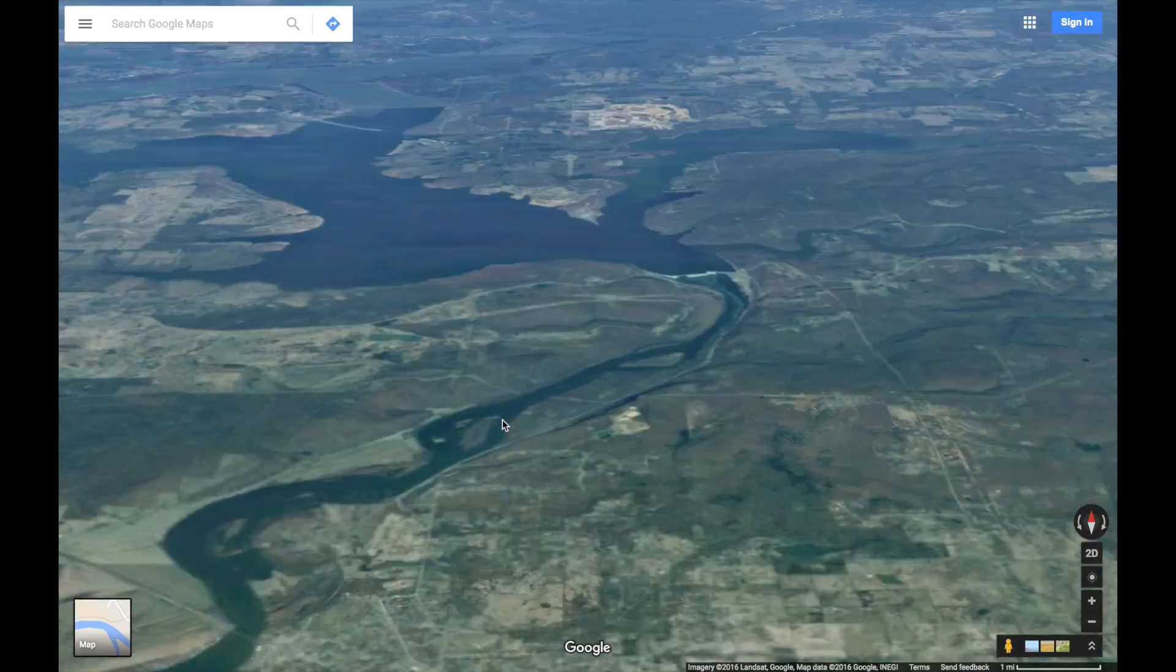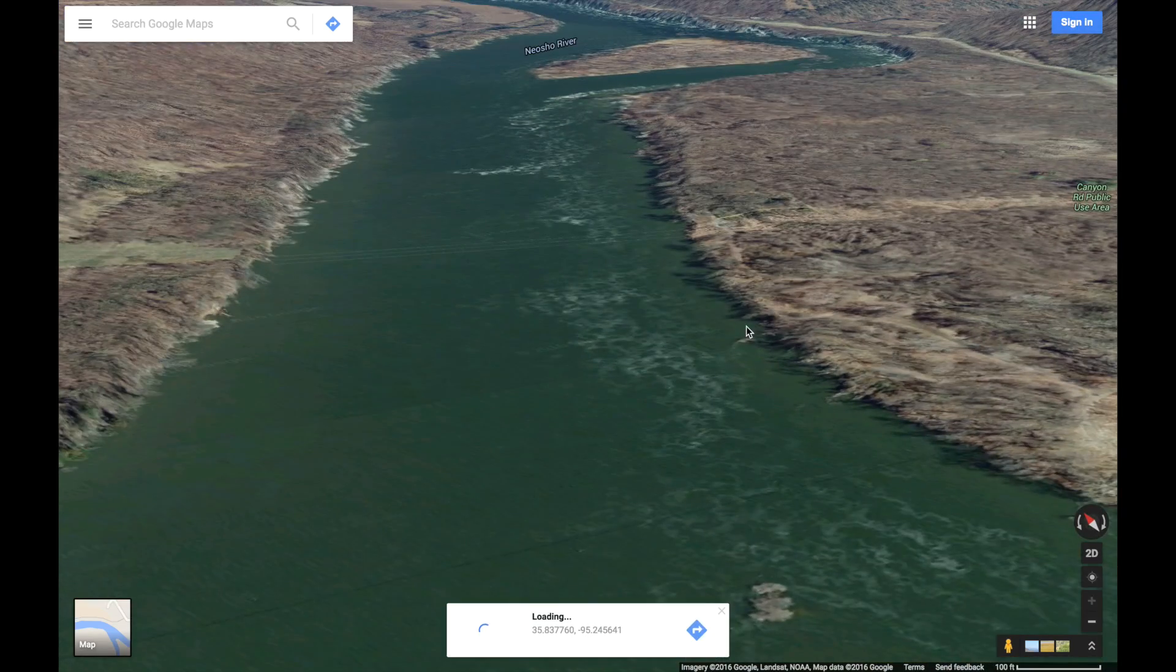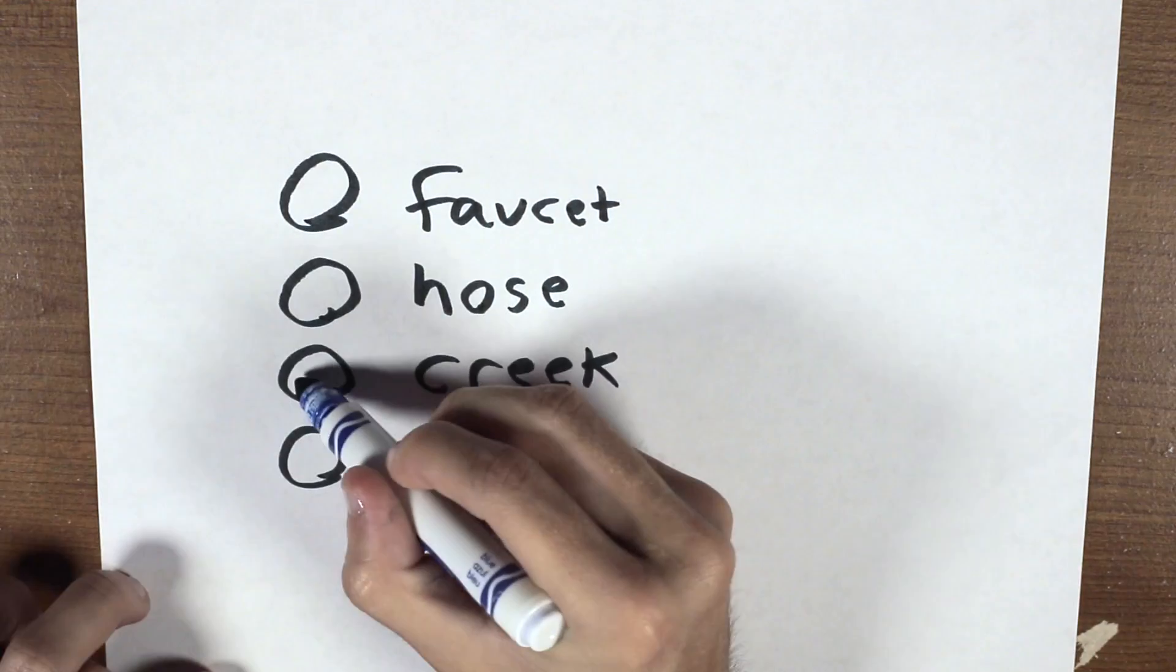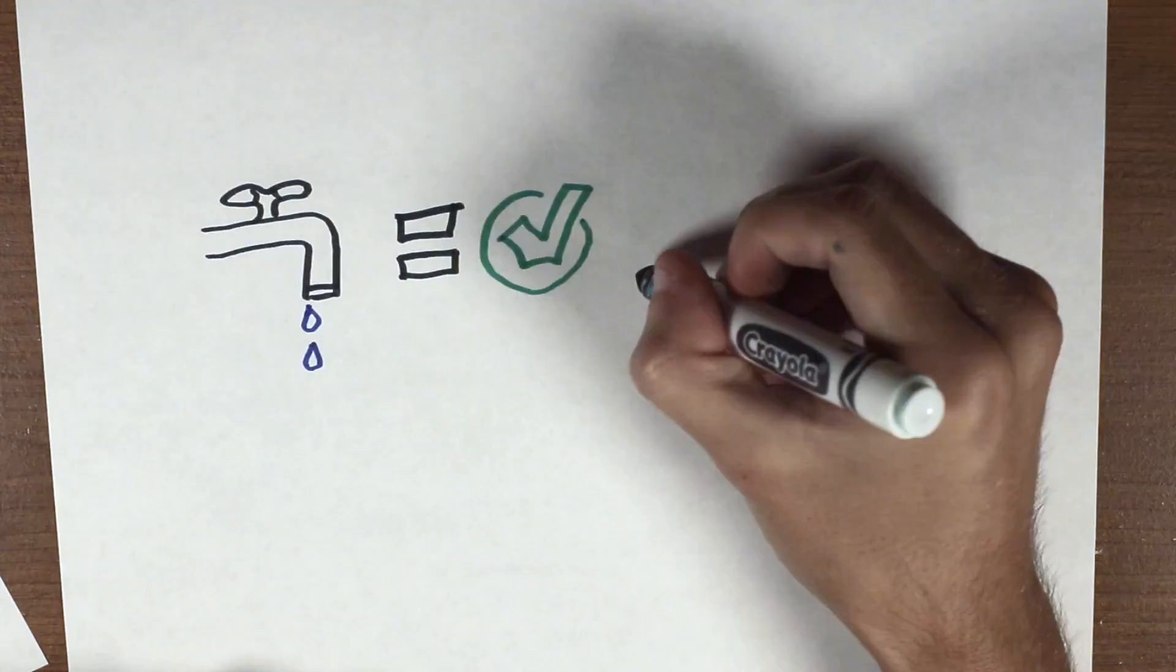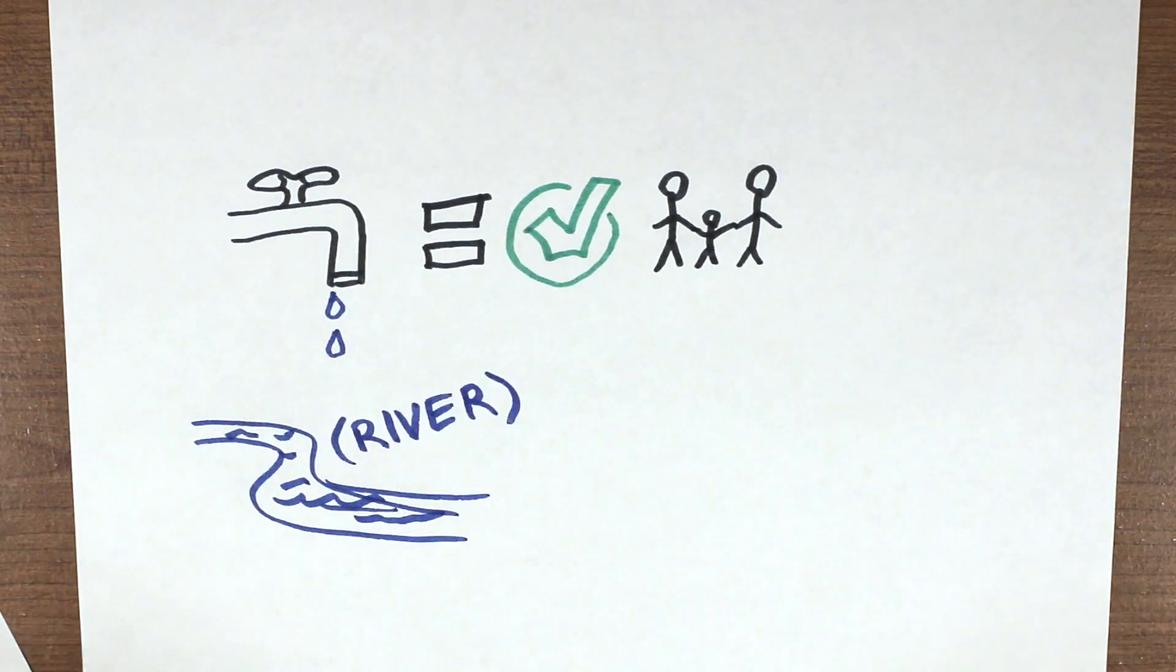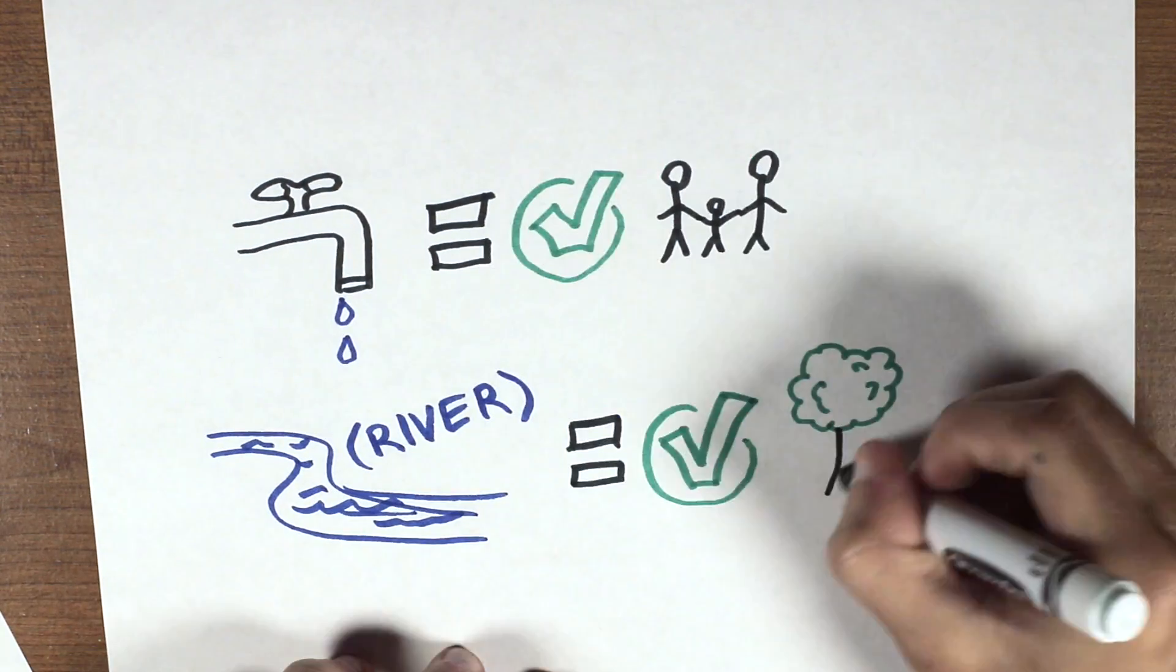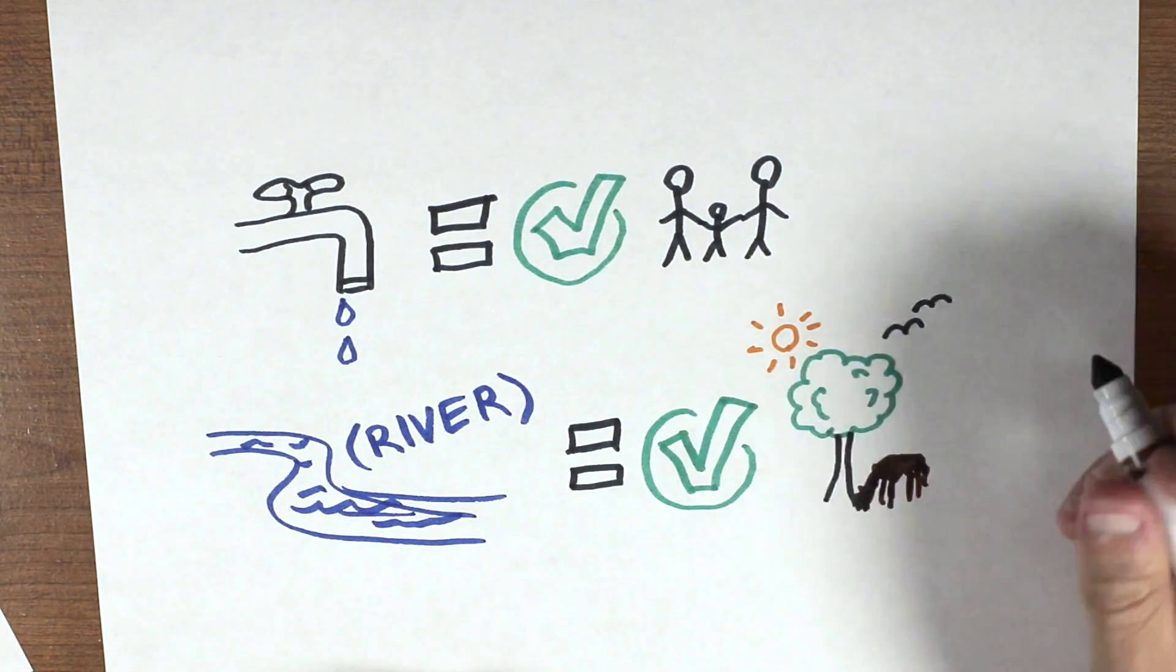When submitting a test result, the site will request the exact location of the test, as well as information about the type of water source. Different sources will have different test benchmarks. For example, residential water sources must be safe for human consumption, while creeks and lakes must be safe for the local ecosystem.